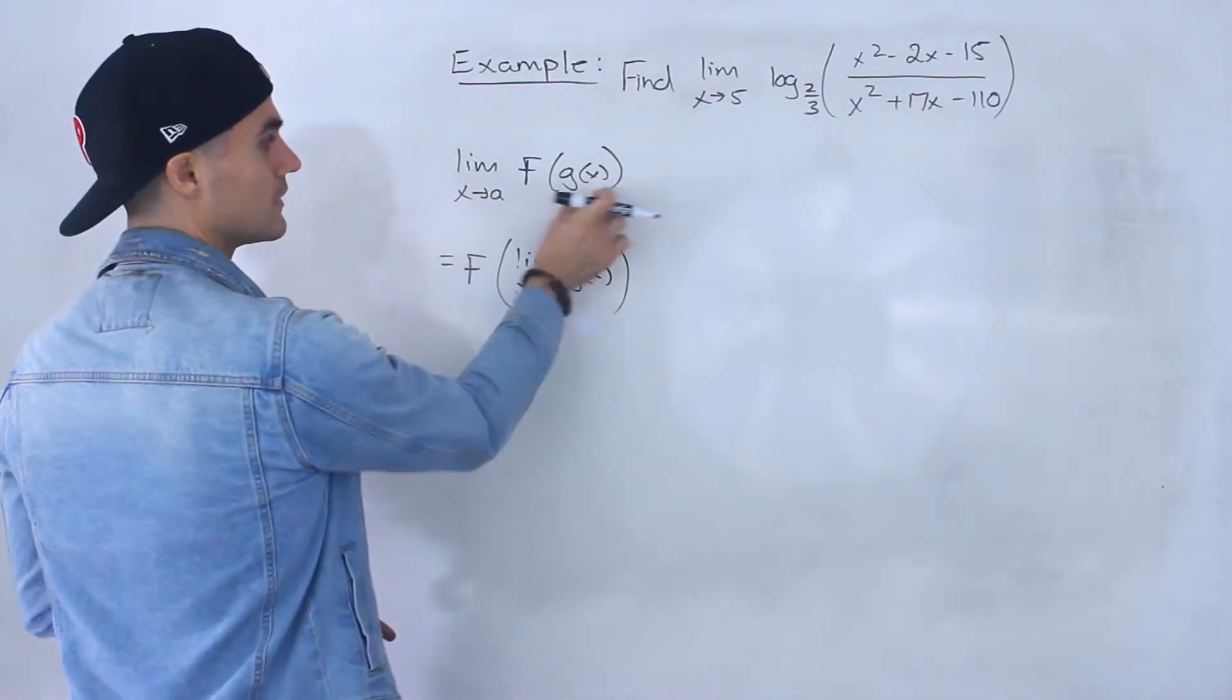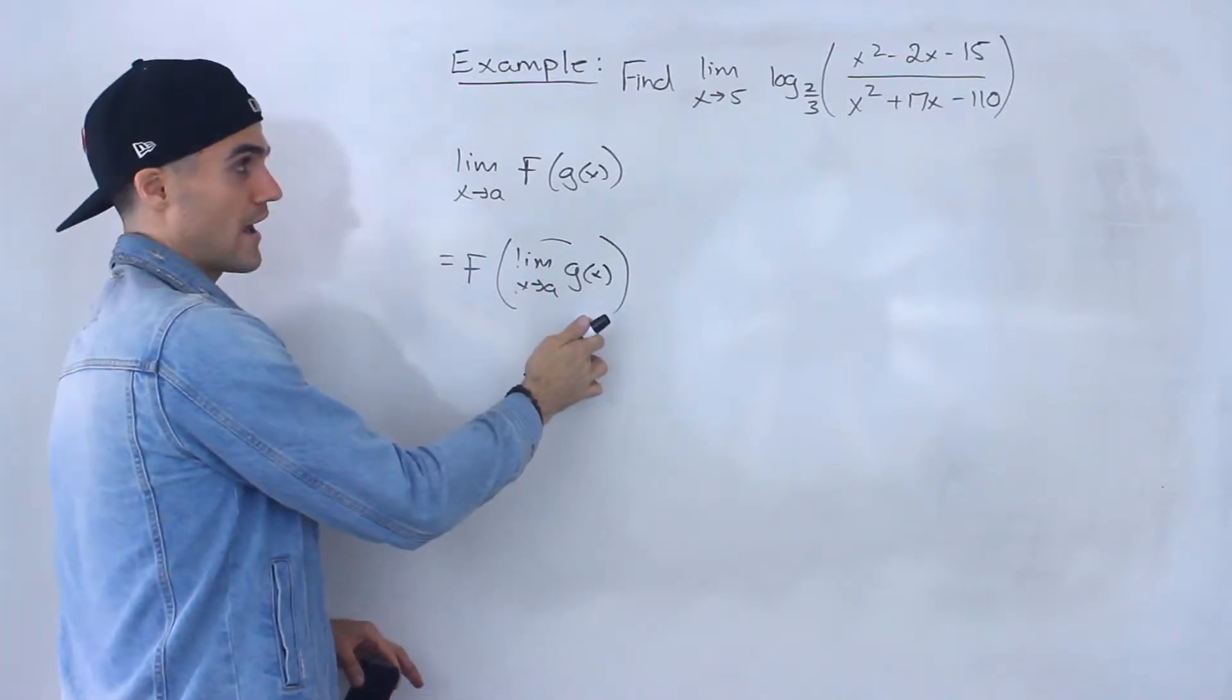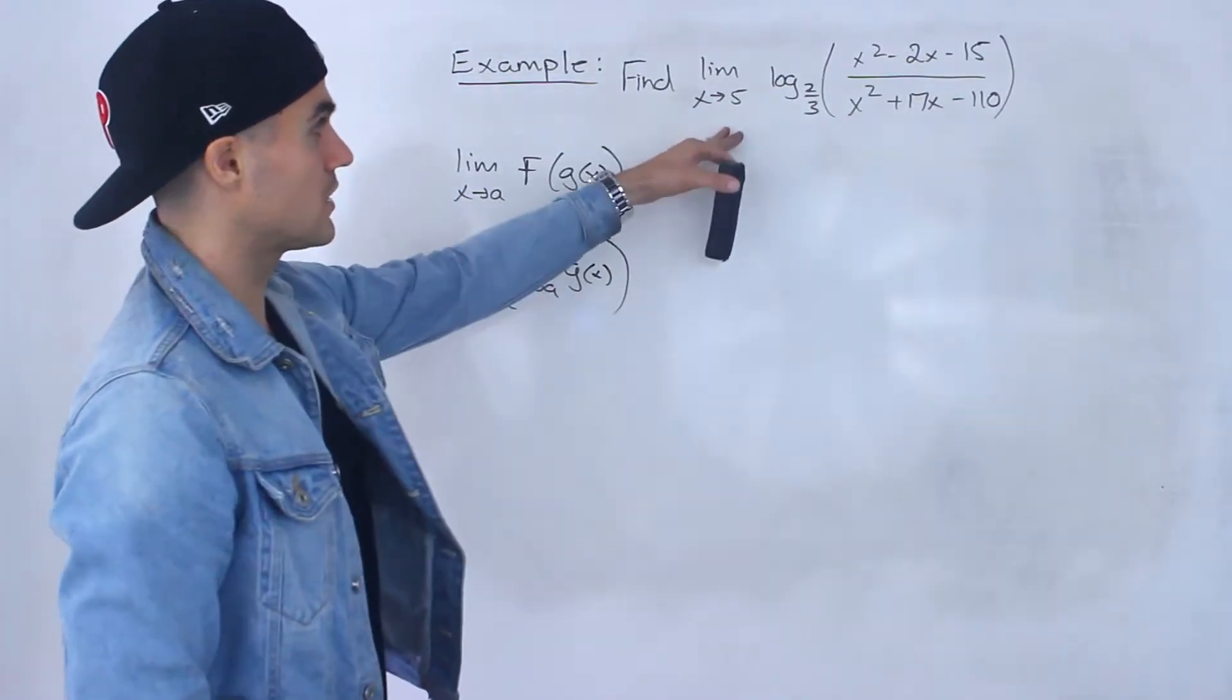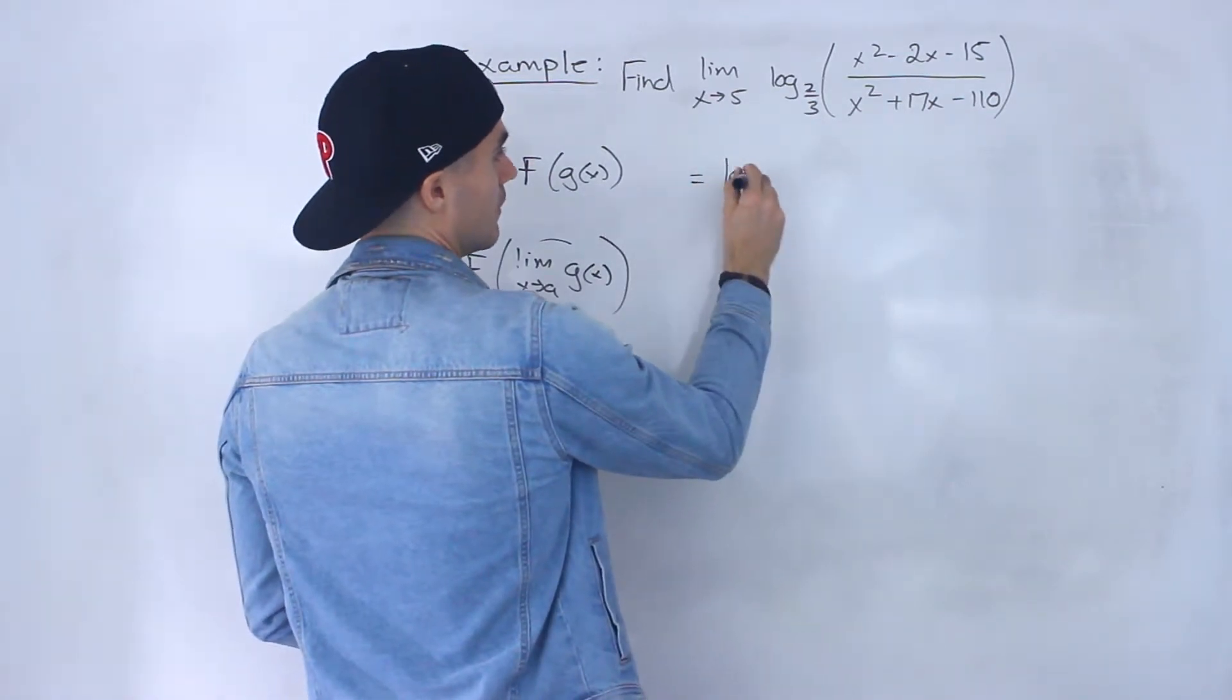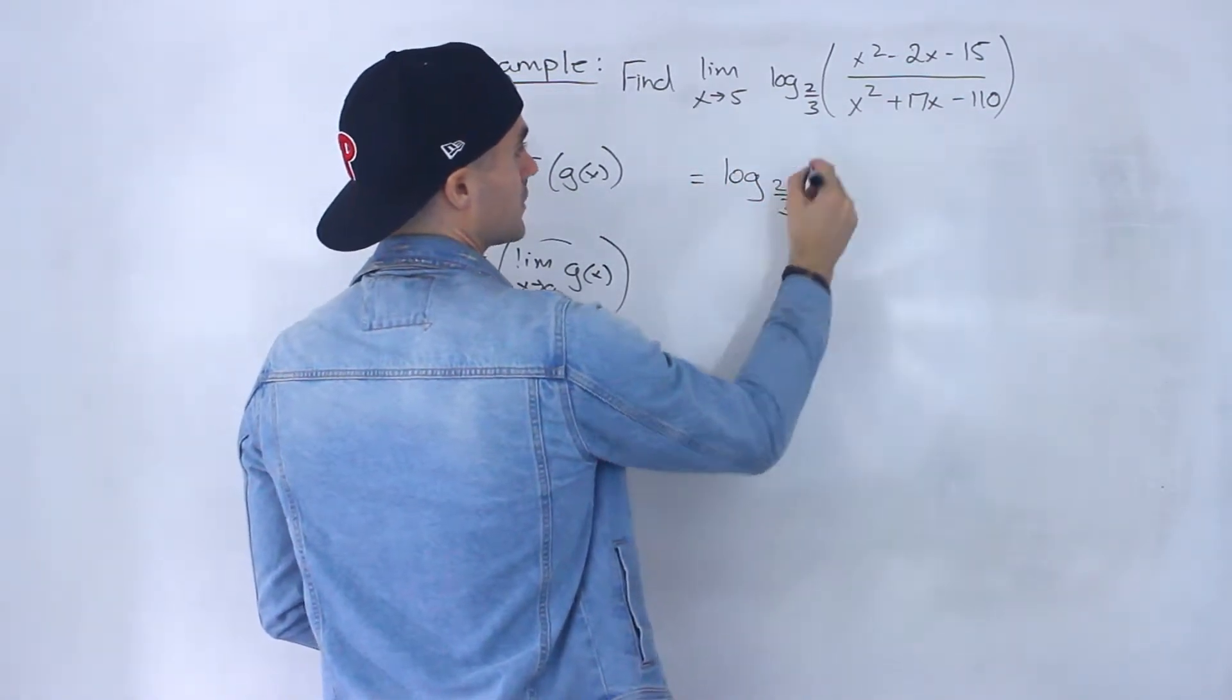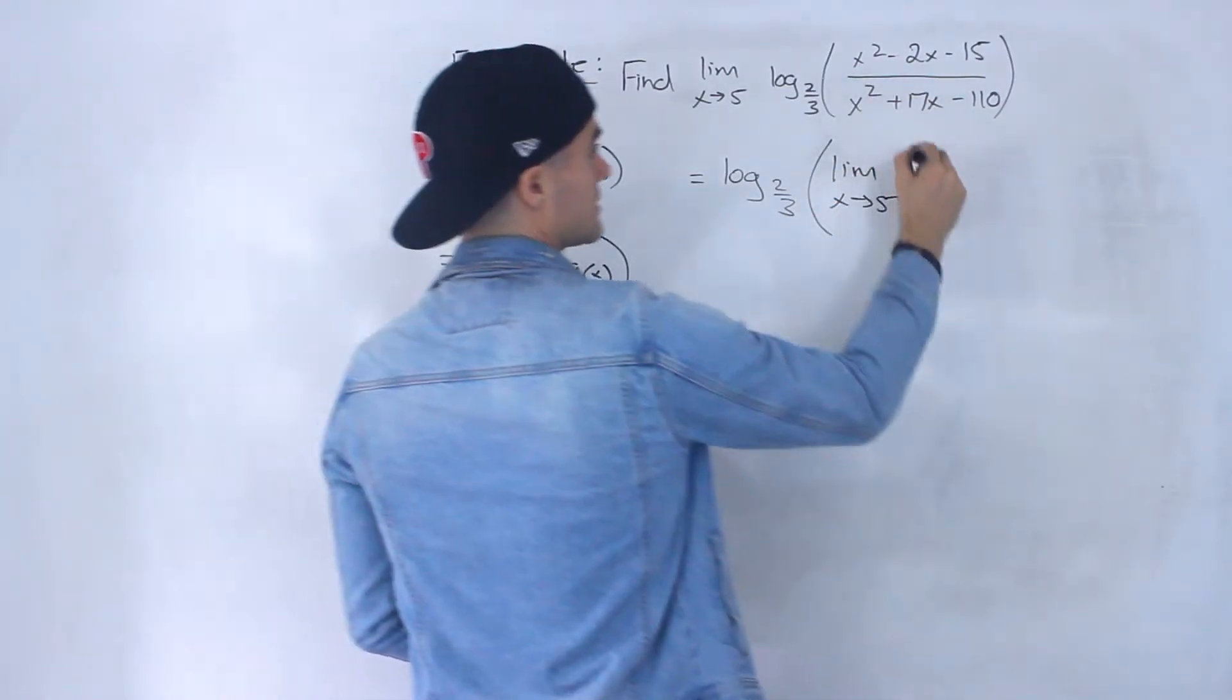So it's like almost you could distribute, quote unquote, this limit inside this bracket. You could find this limit first, then you would just take f of that. So that's actually what I'm going to do here. So I'm going to take this limit. I'm going to sort of distribute it into this.